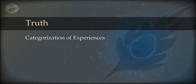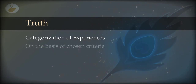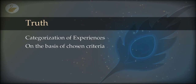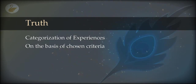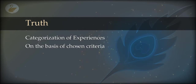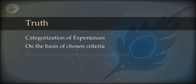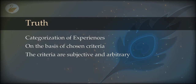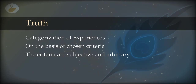We do this kind of categorization based on some chosen criteria. Now the question comes: what are these criteria and who chooses them? Who decides what is true and what is not? And what are the rules to fix these criteria? You will very quickly find that the criteria are chosen by the person who is categorizing, and the person does it as per his liking.